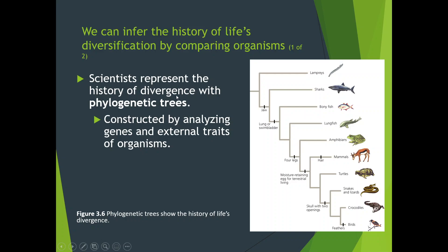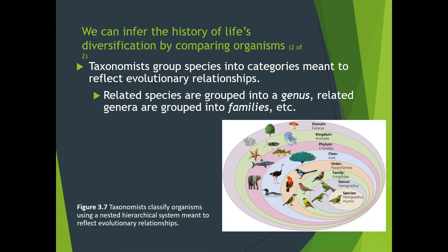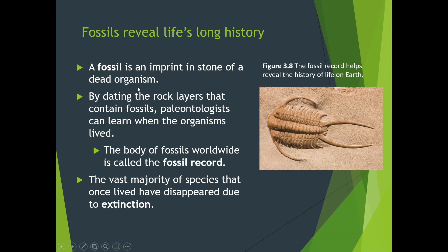Scientists represent the history of divergence through phylogenetic trees, tracing the line of speciation through time. We do this through fossils imprinted in stone and rock layers, looking at the fossil record to see how animals have changed over millions of years. But looking through the fossil record, we see a vast majority of species that once lived have disappeared — about 99% of the animals that have ever lived on Earth are no longer around. They either changed into new species or died off because the environment changed faster than they could adapt.